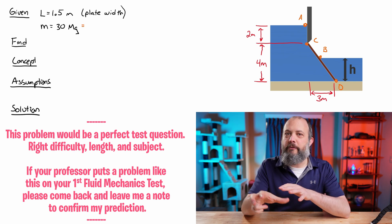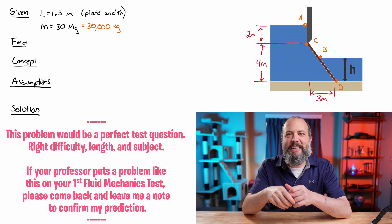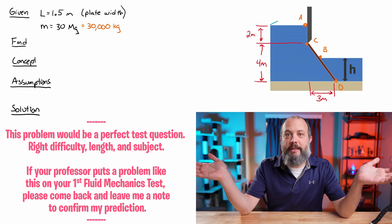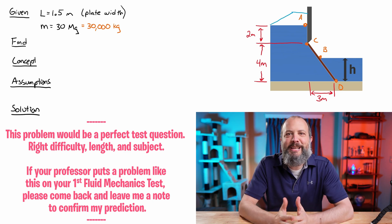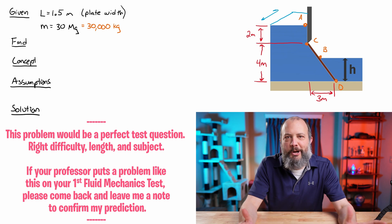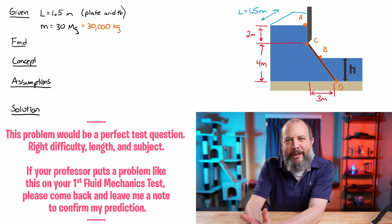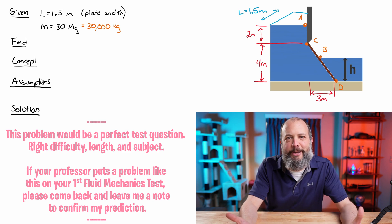Givens for this problem are a width of 1.5 meters - that's a dimension into the screen of this gate. And that the gate itself is massively heavy, 30 megagrams, which right off the bat I'm going to convert into 30,000 kilograms so that the units don't mess us up later on.